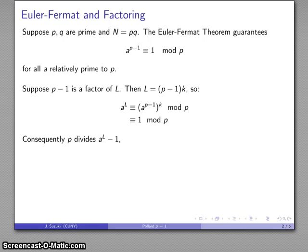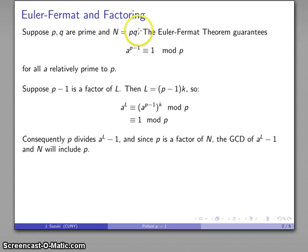And so that tells me p divides the difference a to the L minus 1. And remember, p is a factor of N as well. So that tells me that the greatest common divisor of a to the L minus 1 and N will also include p.